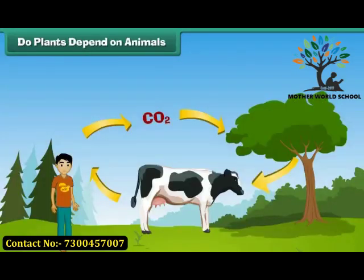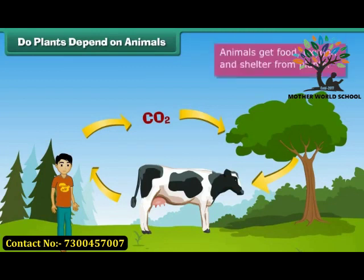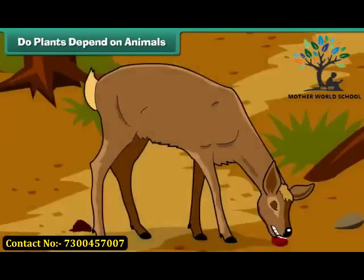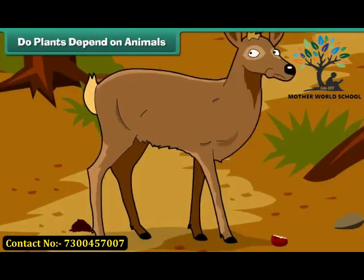Do plants depend on animals? Animals get food, oxygen, and shelter from plants. Do they give anything to plants in return? Yes — plants need carbon dioxide to produce their food. When animals breathe out, they release carbon dioxide and help the plants in making their food through the process of photosynthesis.